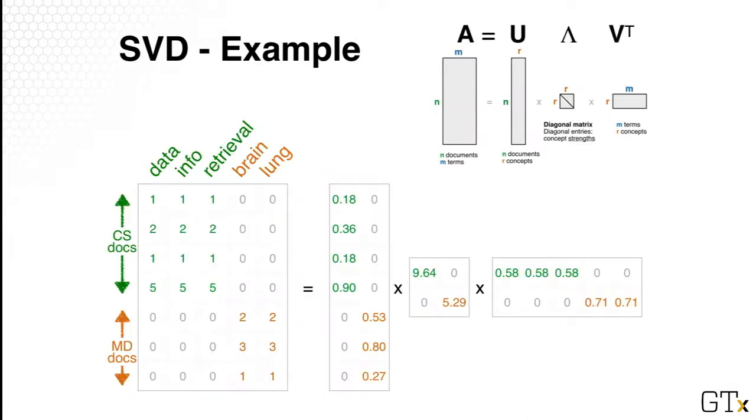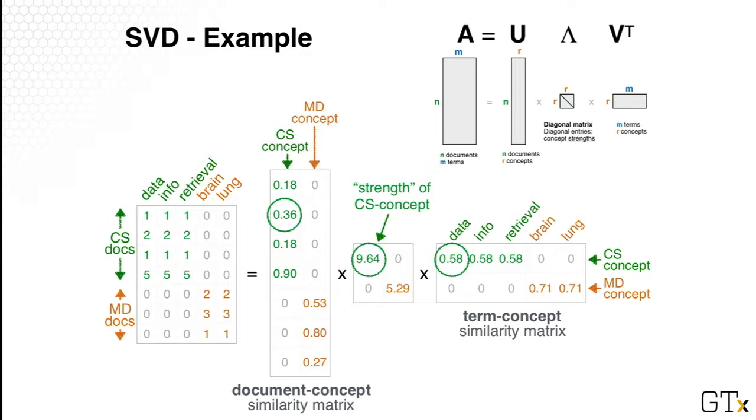So let's look at a numerical example of what SVD can do. So here the rows are documents and columns are words in the document. So cell values are word counts, but as you may recall, it can be anything. It can be zero and one to express the existence of words, or they can be TF-IDF scores. So here we're just using word count for simplicity.